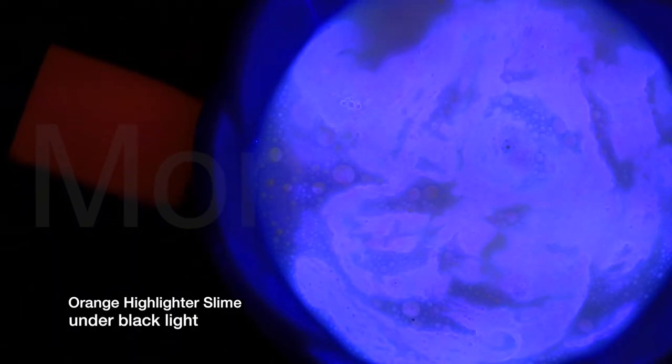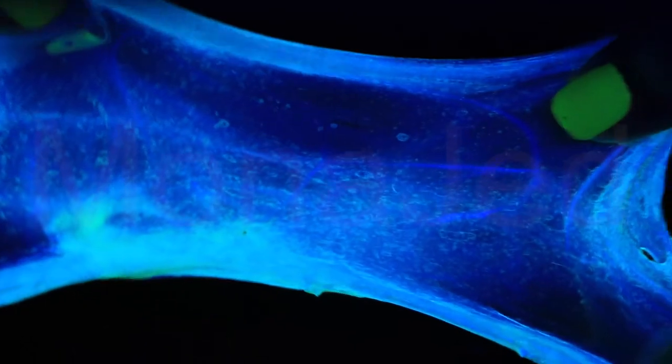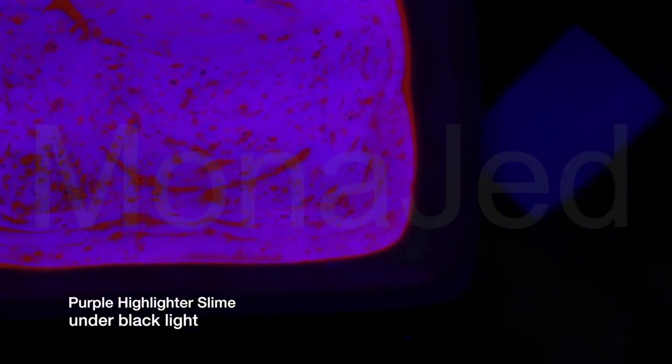This is what the orange highlighter looks like under black light. When a fluorescent object is illuminated by both visible light and ultraviolet light, such as when illuminated by sunlight, the object will still convert the ultraviolet light to visible light.